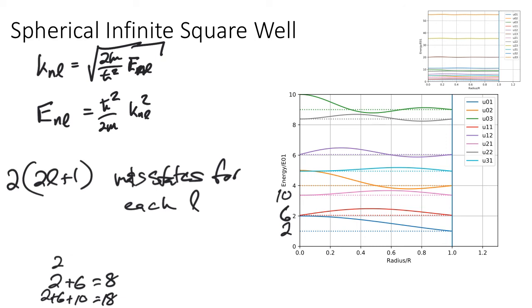I will note that if we go all the way out to J equals three, you're going to have two plus six plus 10 plus 14 plus 18, which equals 50. So you could out of this scheme, get a shell with 50 all taking the n equals one, but L from zero to three, zero to four states to get another of the magic number shells. So qualitatively, the spherical infinite square well can account for some of the magic numbers in nuclear shells, but not all of them.